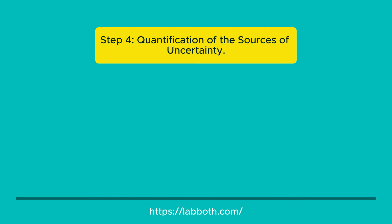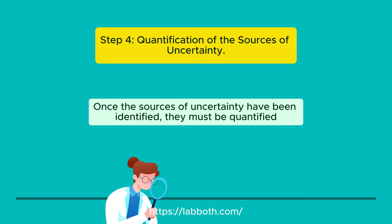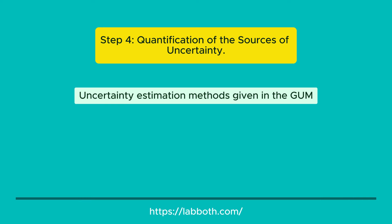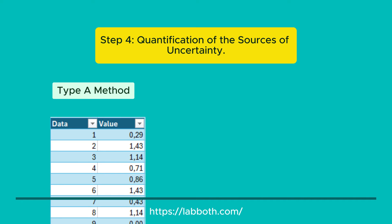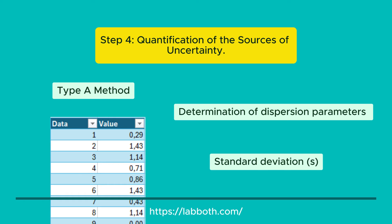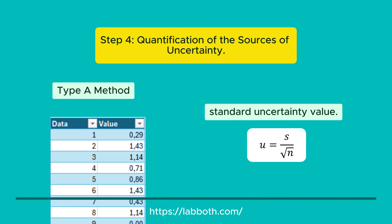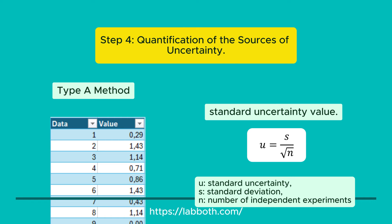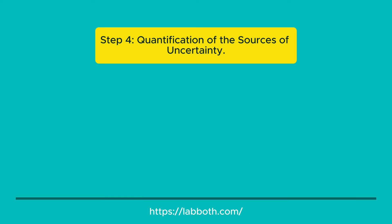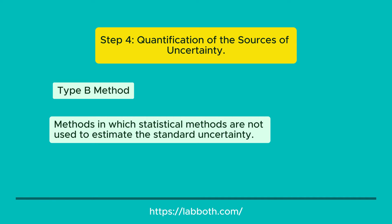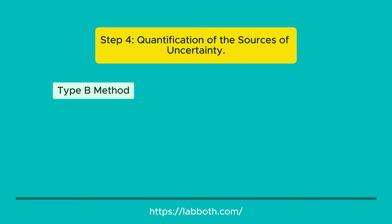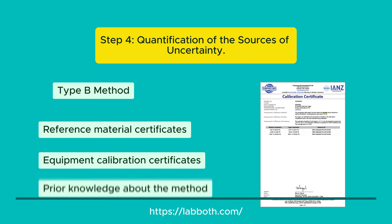Step 4: Quantification of the Sources of Uncertainty. Once the sources have been identified, they must be quantified using the uncertainty estimation methods given in the GUM guide: Type A or Type B. Type A refers to estimation through statistical methods — for example, collecting data under repeatability conditions and determining dispersion parameters such as standard deviation. Apply the formula U = S / √N to obtain the standard uncertainty, where U is standard uncertainty, S is standard deviation, and N is the number of independent experiments. Type B considers methods not based on statistics, such as reference material certificates, equipment calibration certificates, and prior knowledge about the method.